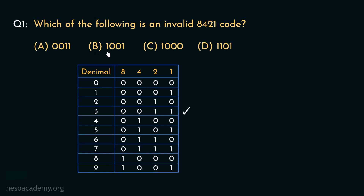Coming to option B, it is 1001. Look at the chart. You can see for the symbol 9, we have the encoding as 1001. So this too is a valid 8421 code. Now coming to option C, it is 1000. Observe for 8, the encoding is 1000. So this too is a valid 8421 code. So that leaves us with only option D. Now if you observe, 1101 is not enlisted in this particular chart.